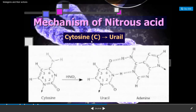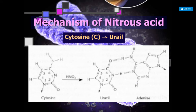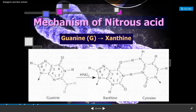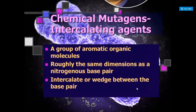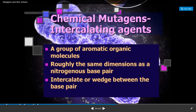Cytosine in the presence of nitrous acid is converted to uracil, which then pairs with adenine, changing the nucleotide sequence. Guanine in the presence of nitrous acid is converted to xanthine, which pairs with cytosine. In this way there is a change in nucleotide sequence resulting in mutation.